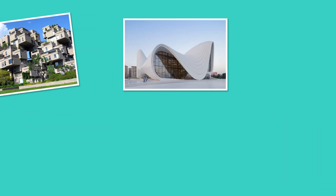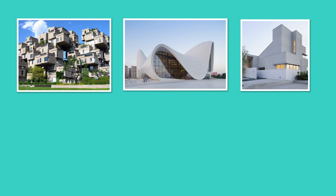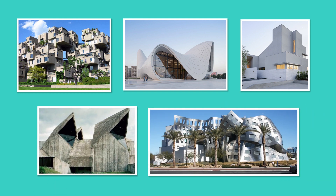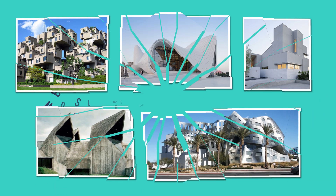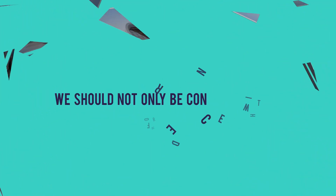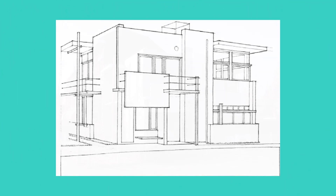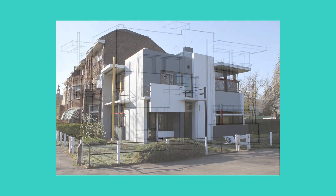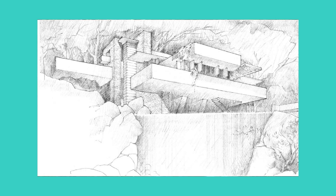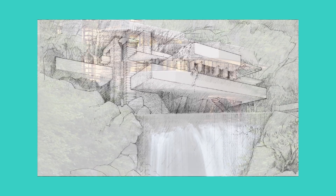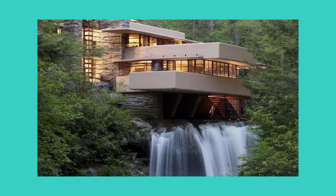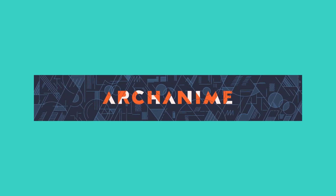However, Ching wants us to understand that in creating spaces, we should not only be concerned with form, but also with its impact on what is around it, such as light that radiates energy and reveals the shape, colors, and textures. All are topics for another video.